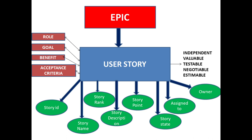Make sure whatever features you develop have business value. Third, testable — whatever functionality you develop in the software must be testable and provide guidance for testing. Fourth, negotiable — it must be adjustable. Fifth, estimable — the user story is estimated according to its size, meaning how much time it requires. Story points are assigned to indicate how many hours development or testing will take.